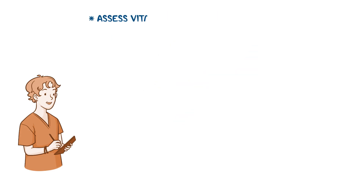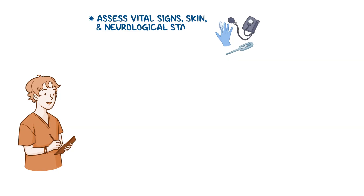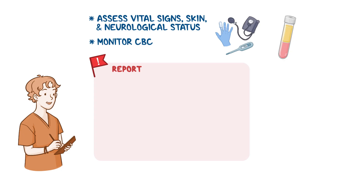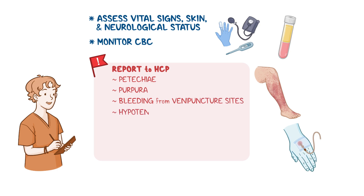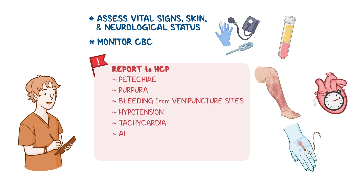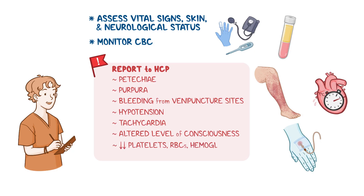Begin by assessing your client's vital signs, skin, and neurological status for signs of bleeding, and monitor your client's CBC. Immediately report signs of active bleeding to the healthcare provider, including petechiae, purpura, bleeding from venipuncture sites, hypotension, tachycardia, altered level of consciousness, as well as decreased platelets, RBCs, hemoglobin, or hematocrit levels.